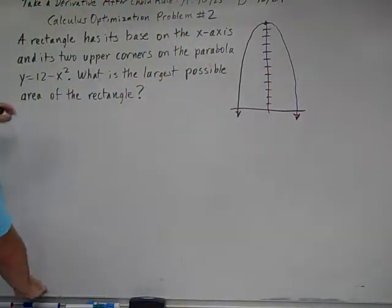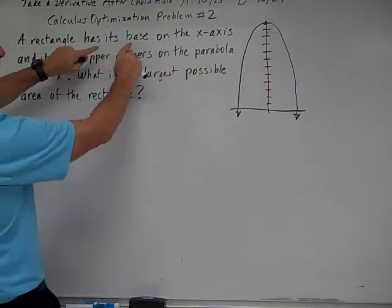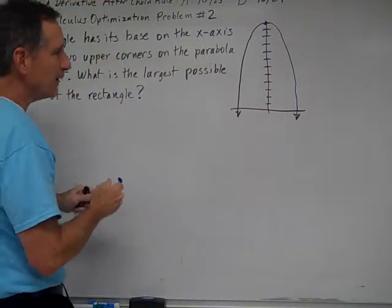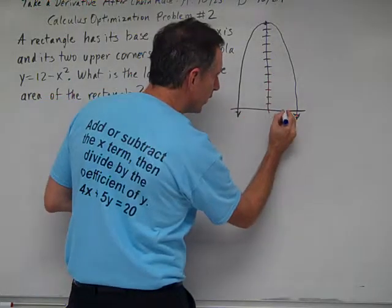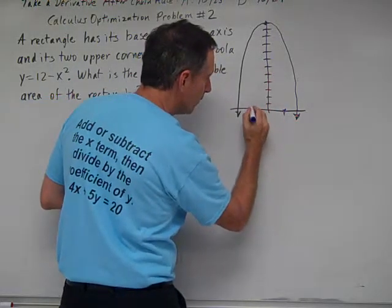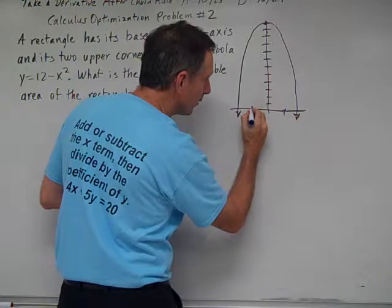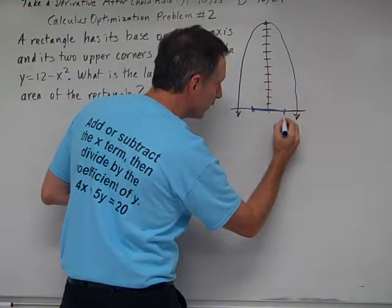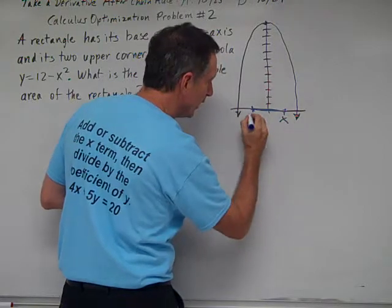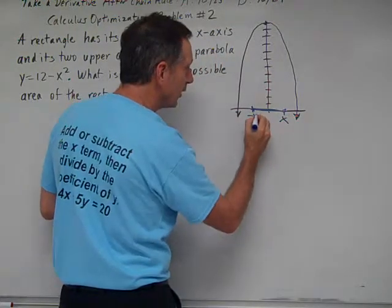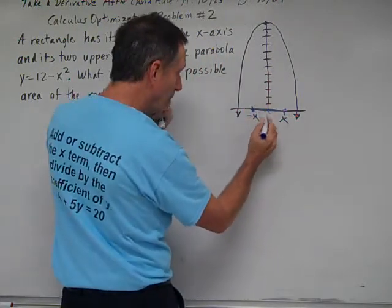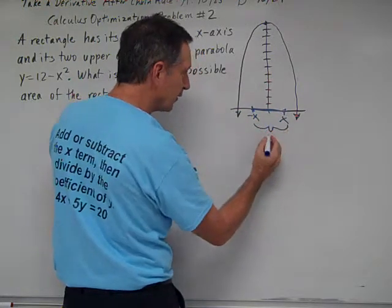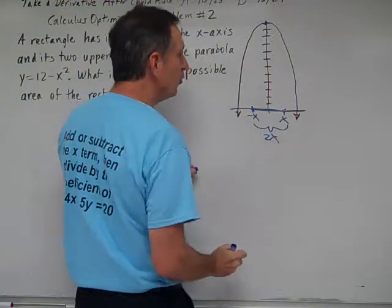The base of the rectangle is going to be along the x-axis, and so we're going to have a rectangle here, a width, and this distance here on this side is going to be x and negative x over here, and so that will be our width will be the absolute value of x plus negative x, which will be 2x.